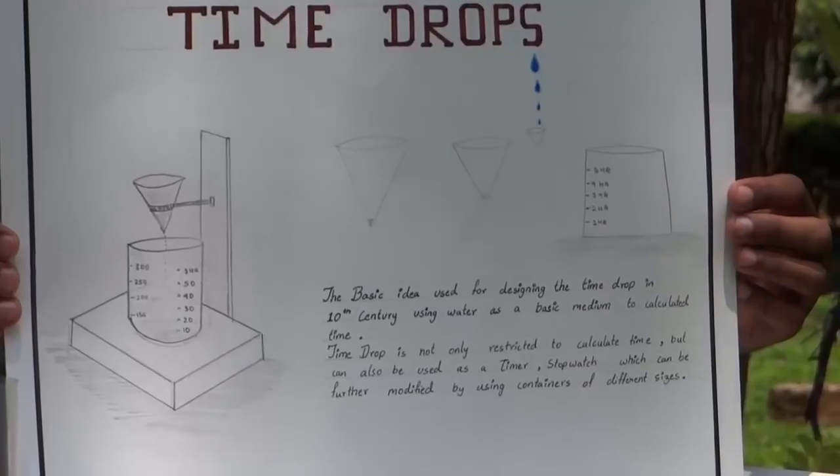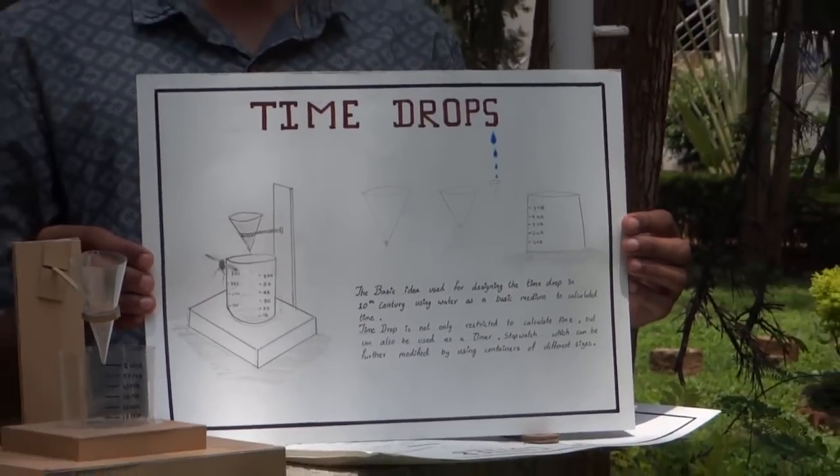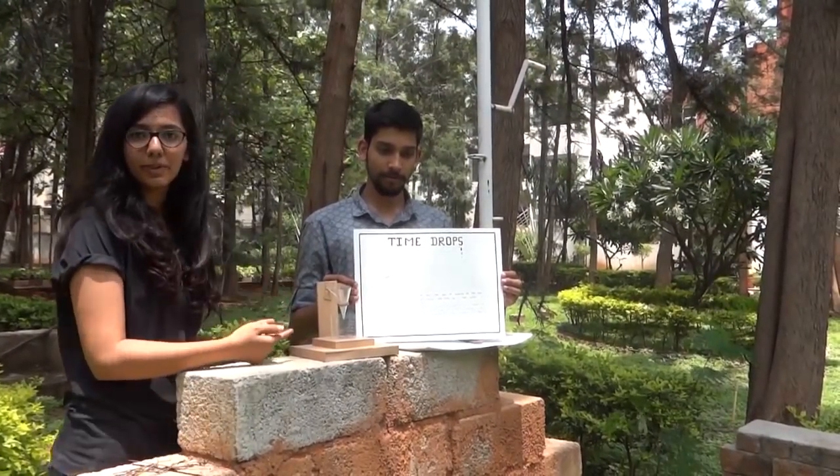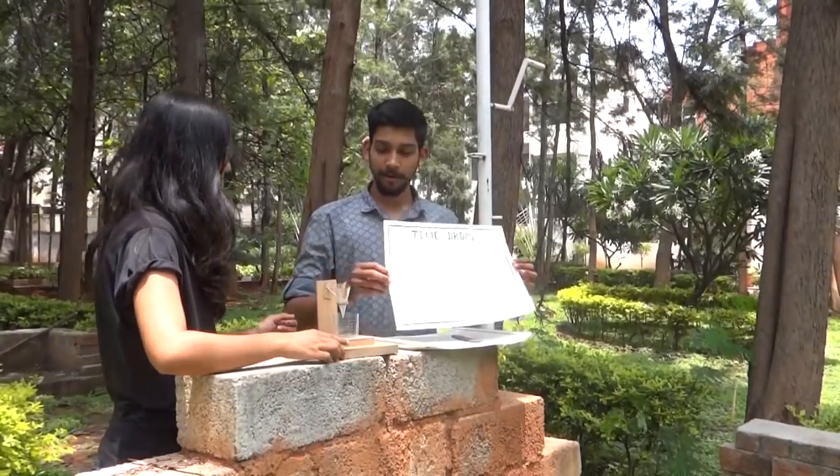We designed a 10th century clock. In ancient times there were different mediums to measure time — sand, the sun's direction and shadow — but we came up with an idea that works in all situations. We named our idea the Time Drops, where we use water as the basic medium to calculate time.